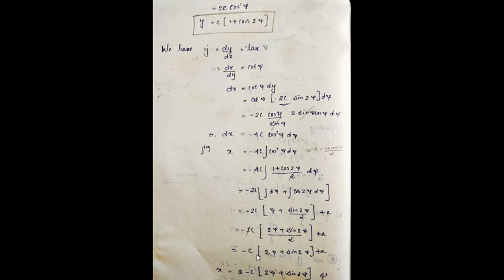Finally, x equals minus c times (2ψ + sin 2ψ) and y equals c times (1 + cos 2ψ). This x and y together are the parametric equations of a cycloid, confirming that the curve of least time is a cycloid. Thank you.